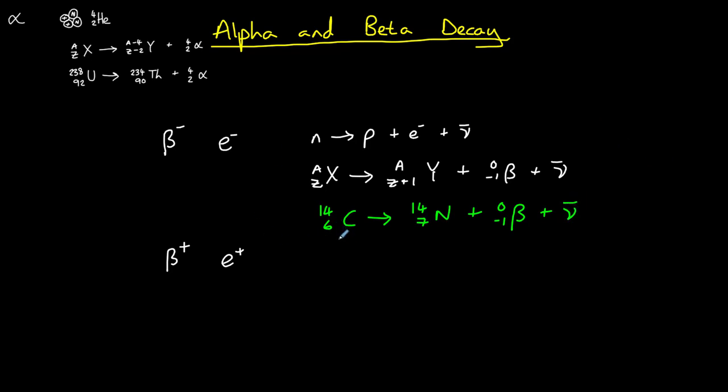Notice that the proton number has increased by one. Again, we can check that this decay equation is correct by balancing it left and right. So we can see that the nucleon number on the left is 14. On the right, it is 14 plus 0. The proton number on the left is 6. The proton number on the right, 7 plus minus 1, gives us a proton number of 6 on the right as well.